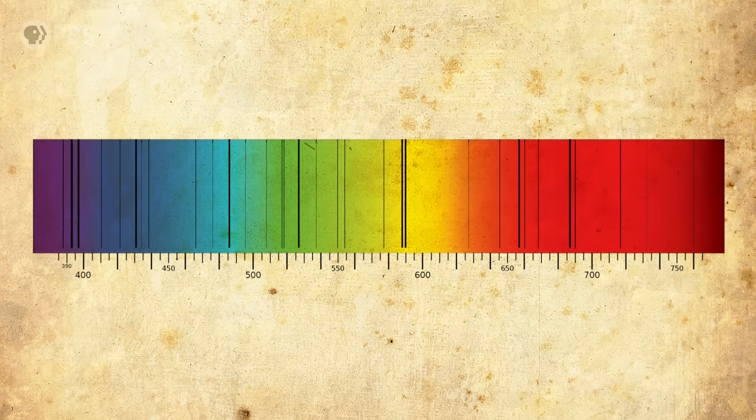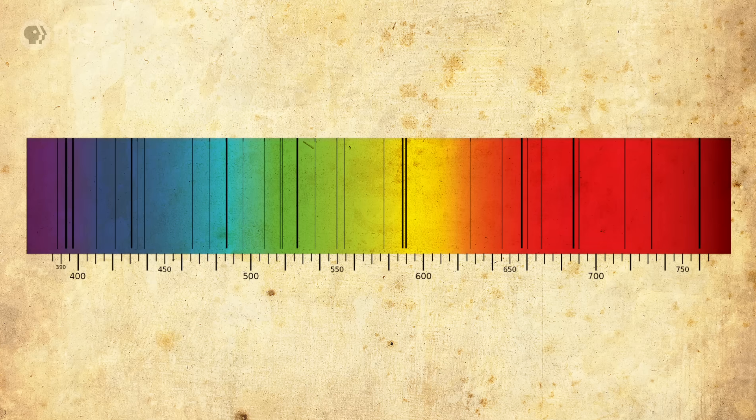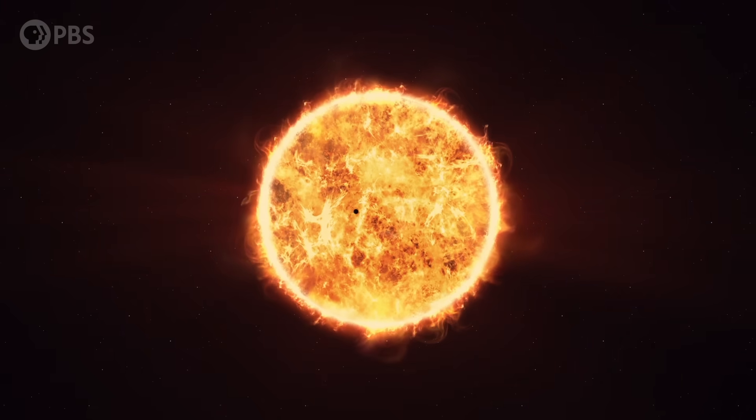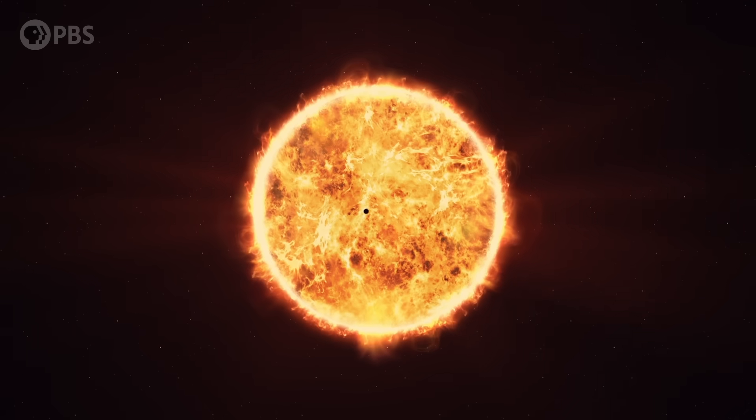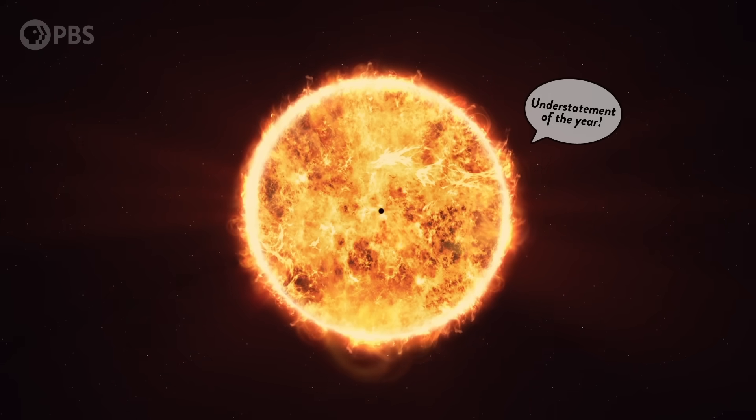By decoding these lines, it would be possible to identify all of the elements the sun contains without ever taking a sample of a hot nuclear ball of gas that's 150 million kilometers away. Which would be difficult. Impossible.